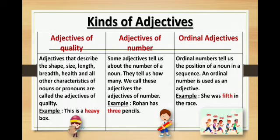Now, adjective of number. Some adjectives tell us about the number of a noun — they tell us how many. We call these adjectives of number. For example: Rohan has three pencils. Adjectives of number give information about the numbers or order of persons or things. In other words, some adjectives tell us about the number of a noun and tell us how many.